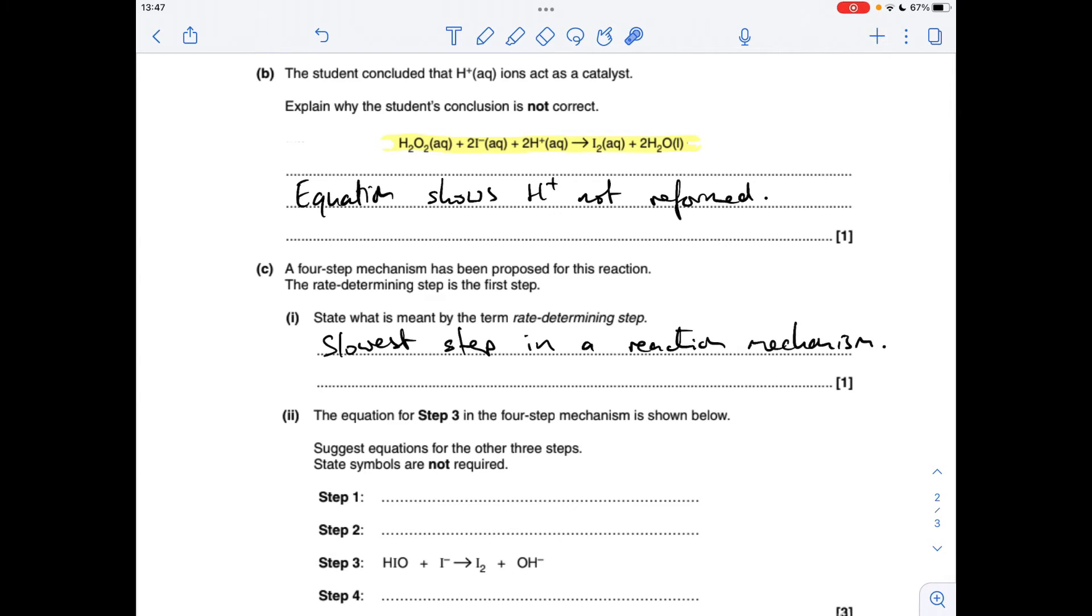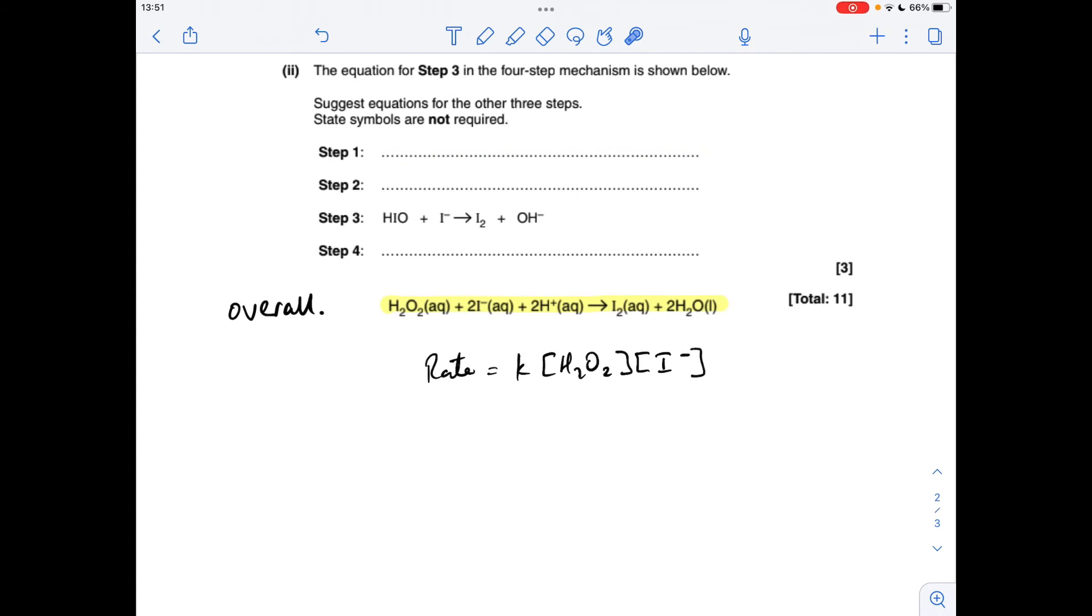What's meant by the term rate determining step? That's simply just the slowest step in a reaction mechanism. And the final part of the question, so it's a bit awkward, this four-step mechanism, and we've been given step three.